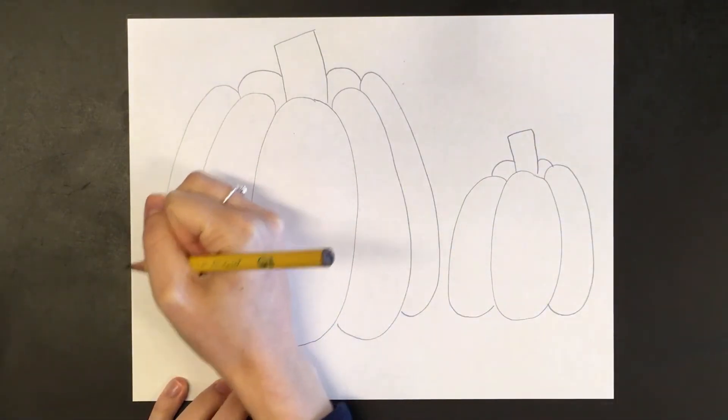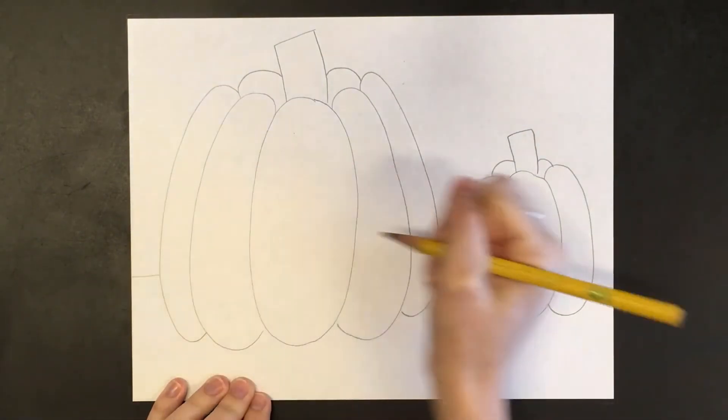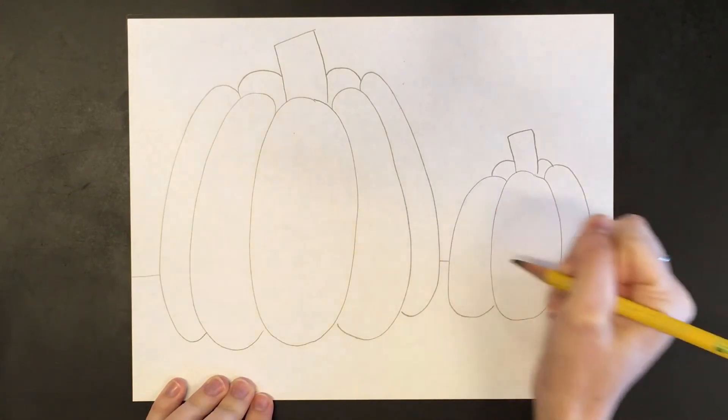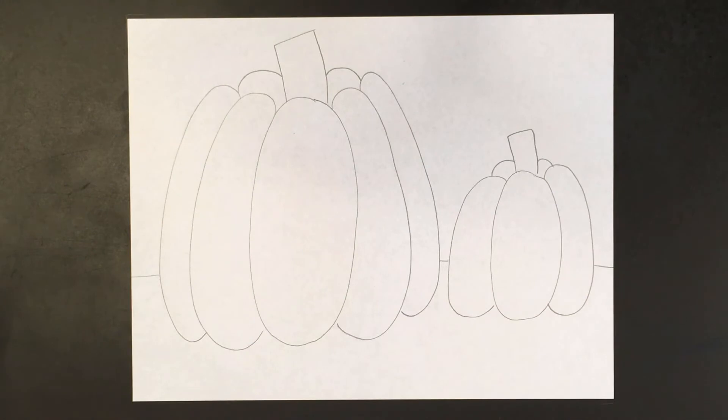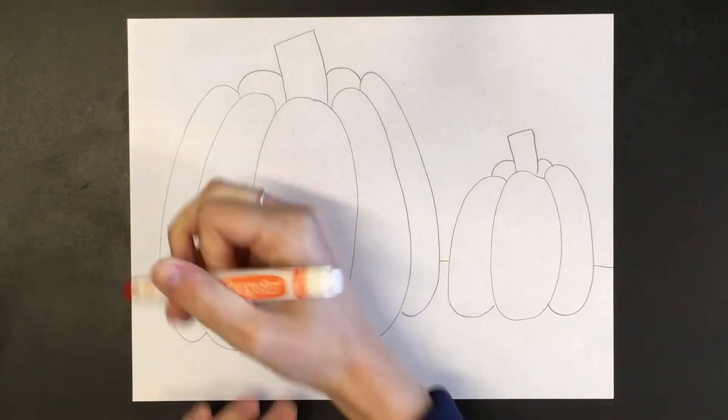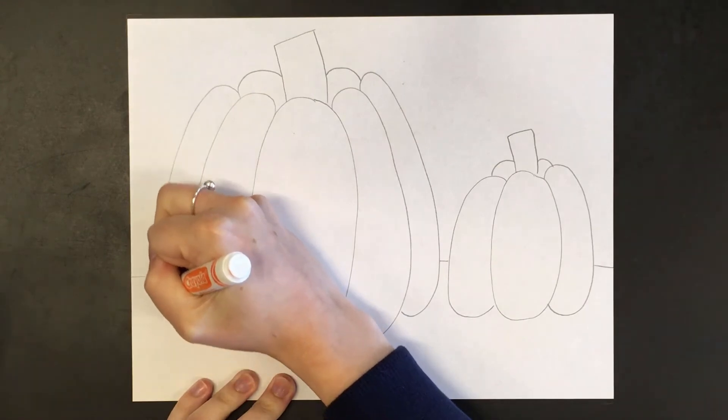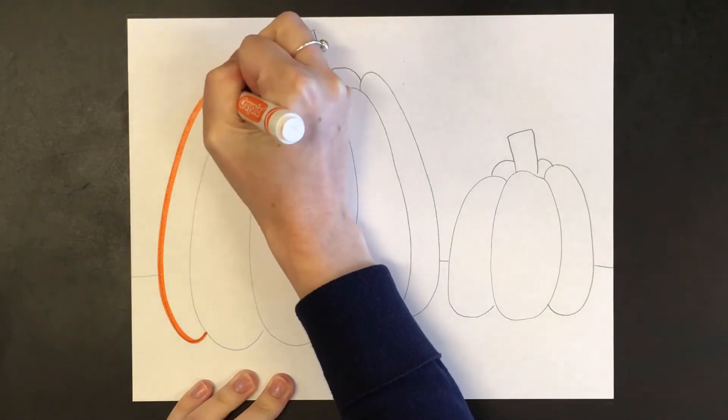I'm also going to just draw a horizontal line that goes all the way across my paper so that looks like the pumpkins are sitting on the ground. Once I'm finished with pencil, I'm going to trace with either a crayon or a marker. I think I'm going to trace my project with an orange marker because it is a pumpkin. So I'm just going to trace everything with this orange marker and then I will check back in with you.